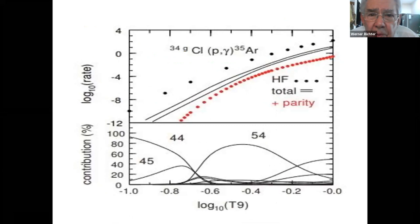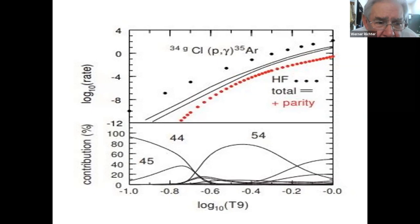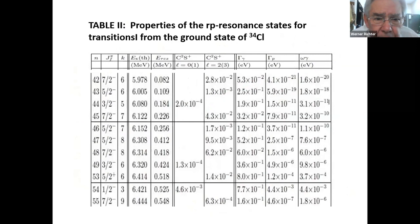Now we make a comparison for the ground state Chlorine-34 p-gamma reaction. Again, we see the positive parity states contribute relatively little. We show the uncertainties in our work, and the strongest resonance is indicated — all the details are in the accompanying tables with spectroscopic factors, widths, and omega-gamma values.